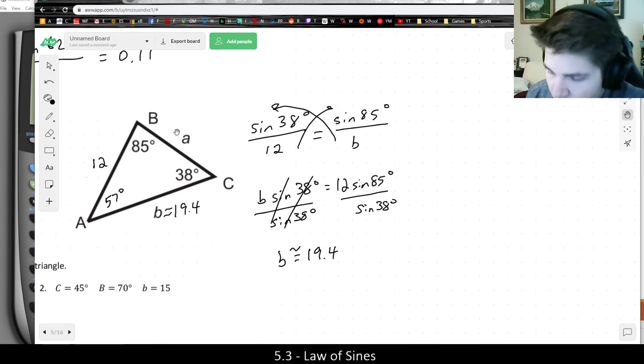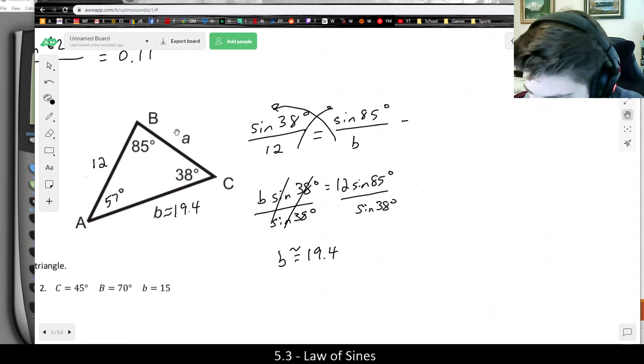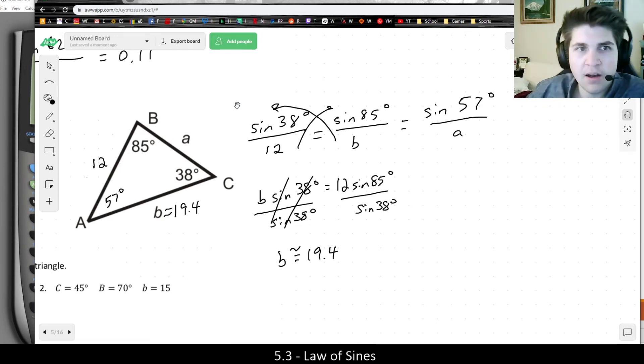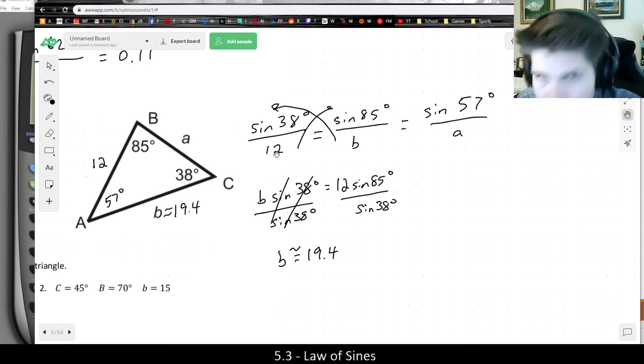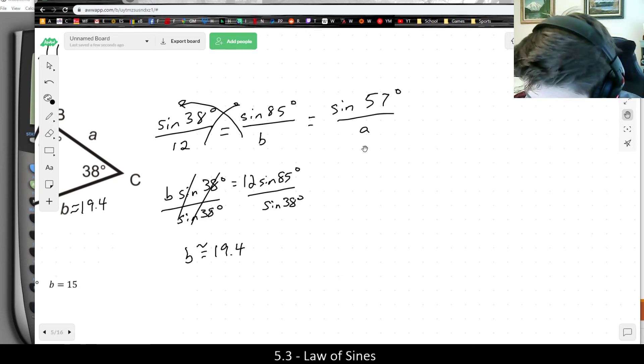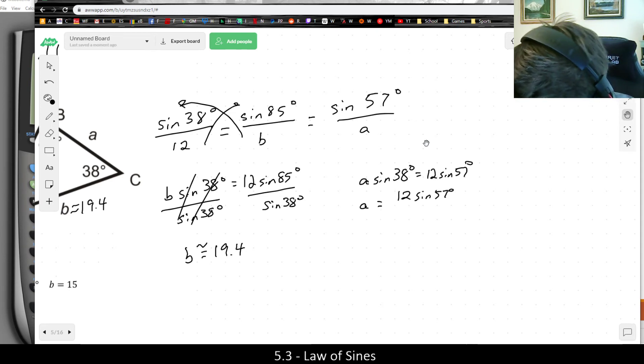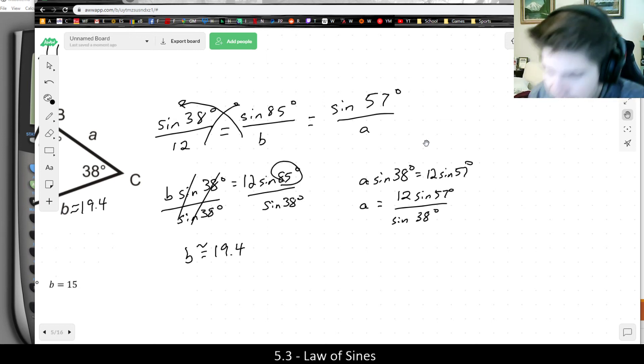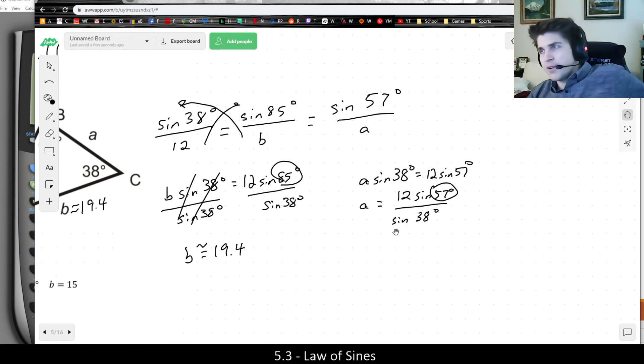Anyways, but we're not quite done because we also need to solve side A as well. Since sine A over A is equal to the same thing, we could use the same setup. We knew angle A was 57. So all of those ratios should also be equal to sine A over A. So solving side A should be exactly the same. I could cross multiply by A. It would be A sine 38 is equal to 12 sine 57 instead. And then I could divide by the sine of 38 to get side A. And really, it's the exact same formula. I'm just replacing angle B with angle A because that's the only difference in these formulas.